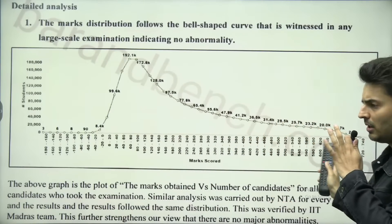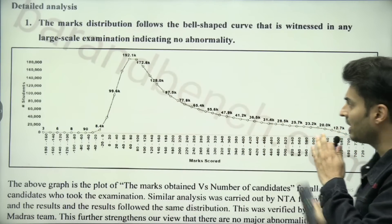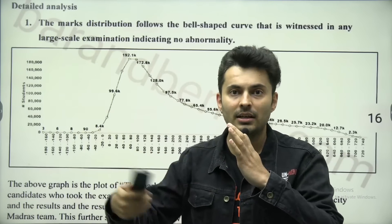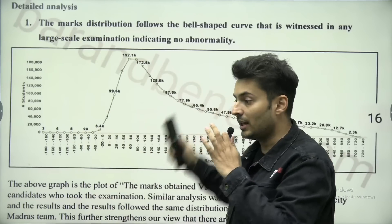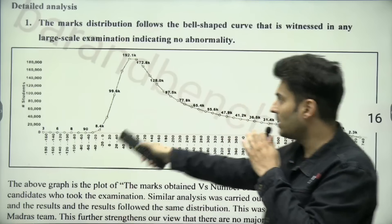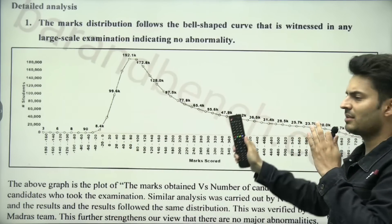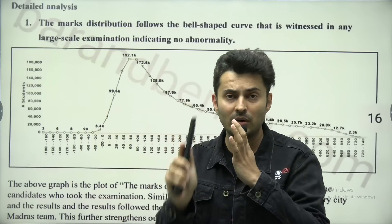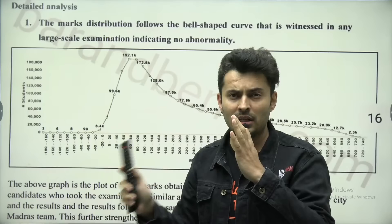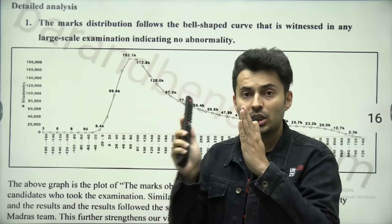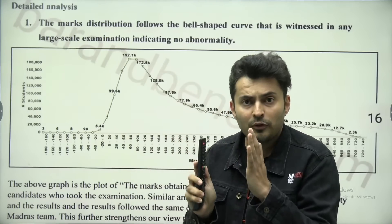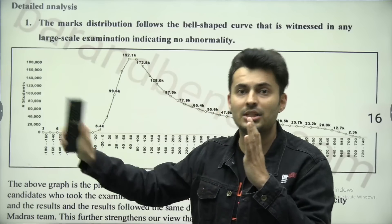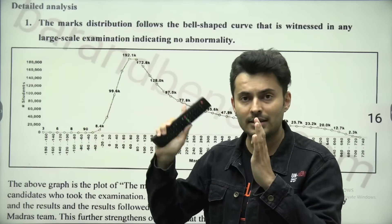They did it for approximately the top 1.5 lakh students across different centers. Because if in a center this graph is slightly different, that means in that center there was some issue. But they found that this graph is very much similar except for a few centers, where students already got caught — like in Bihar, Gujarat, Haryana, and a few other places. Apart from those few abnormalities, there was no major issue across India.